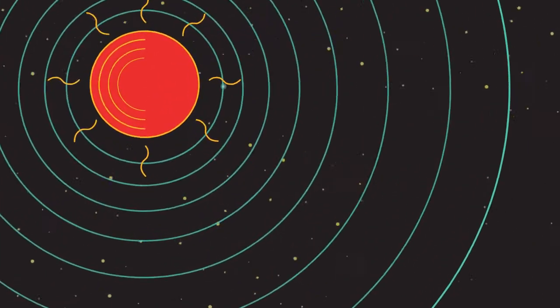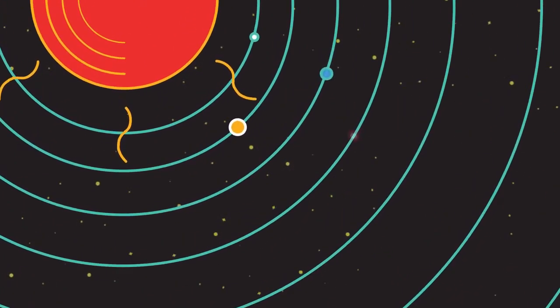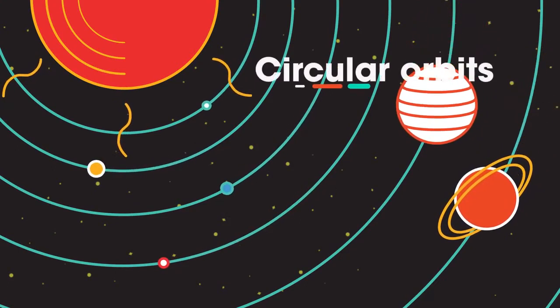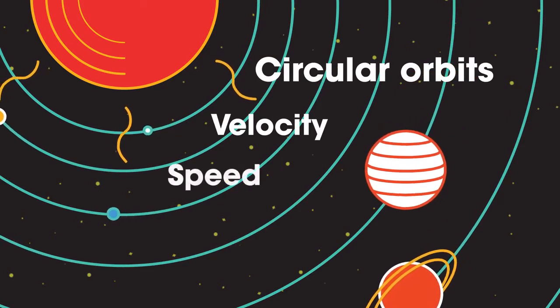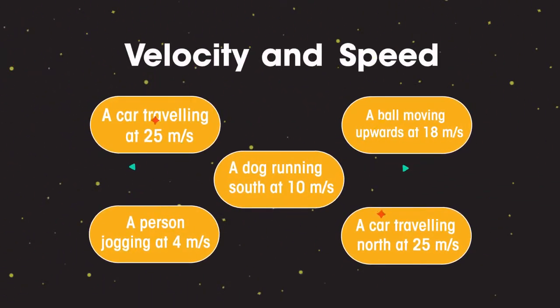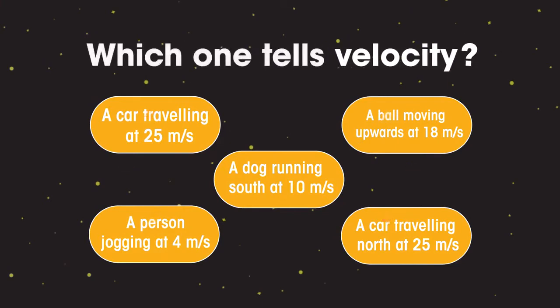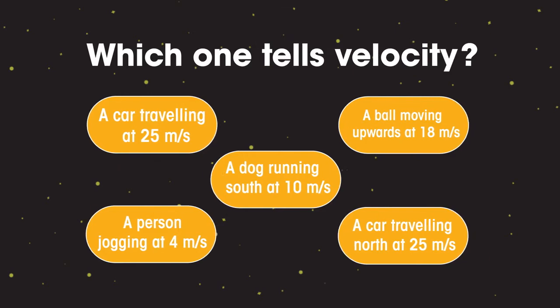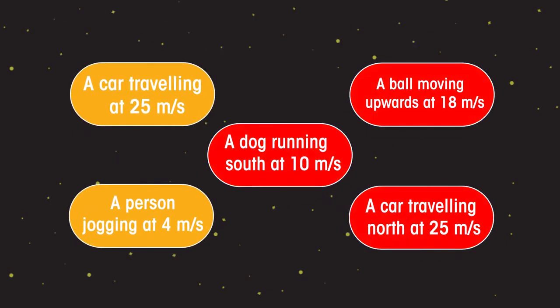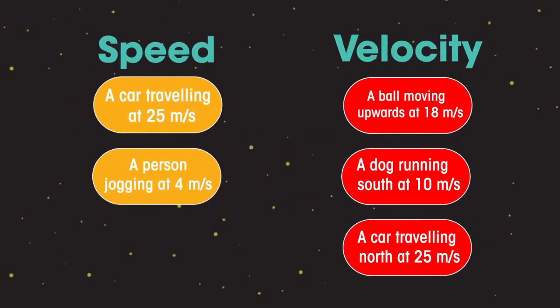In this video we're going to look at some ideas that are out of this world. We're going to look at circular orbits of planets, velocity, speed, and orbit radius. First of all, let's learn the difference between velocity and speed. Which of these measurements tells us a velocity? So how is velocity different to speed? They both contain information about speed.